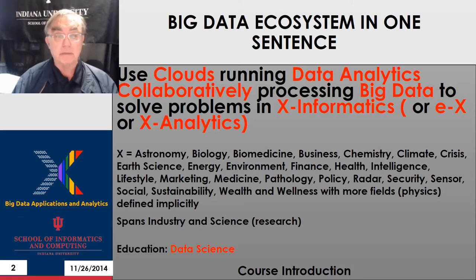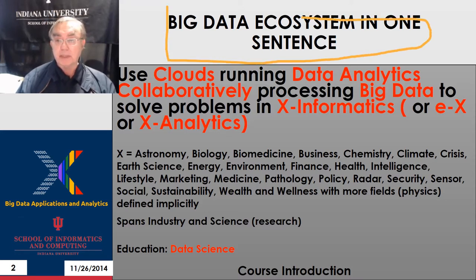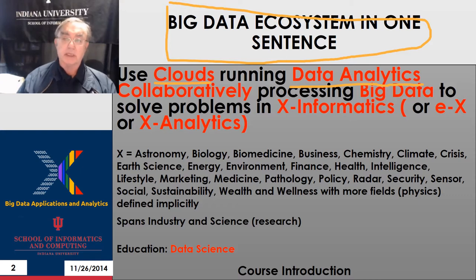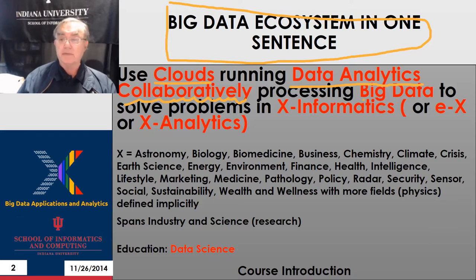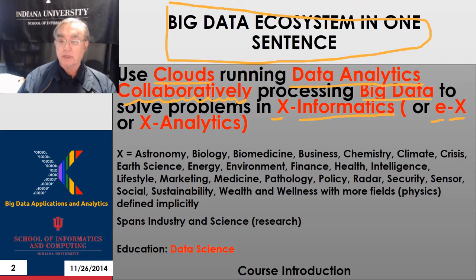This is what big data is in one sentence: we use clouds, we run data analytics — those data analytics running on computers in the cloud, accessing data from storage in the cloud. Everything is done collaboratively. We always work together, whether we synchronize that work via Webex, Facebook, email, face to face, or what have you. In that collaboration, we process big data from the field, which solves problems in X informatics. X informatics is the same thing as the electronic version of X, sometimes called eX — so science informatics is roughly the same as e-science.